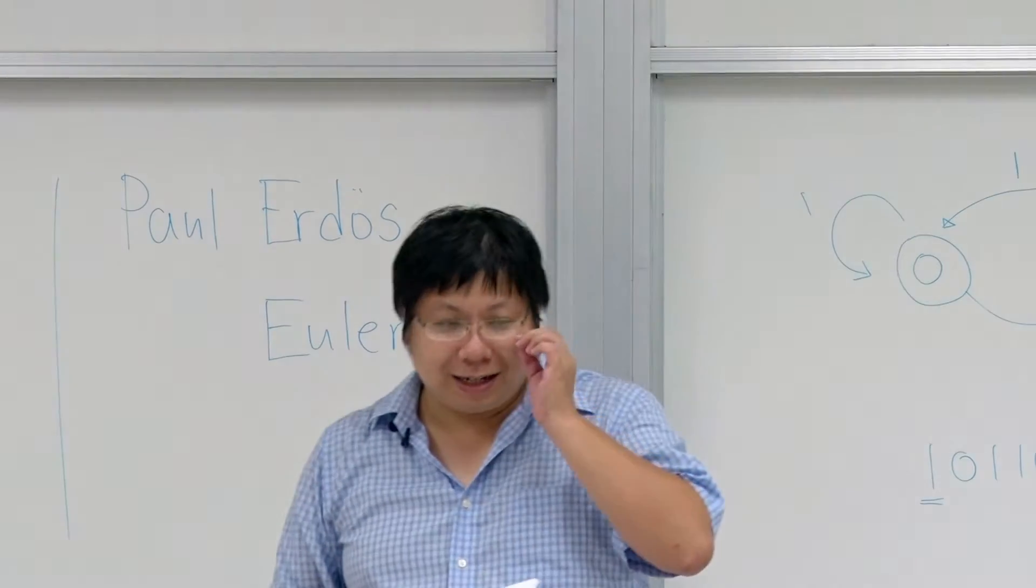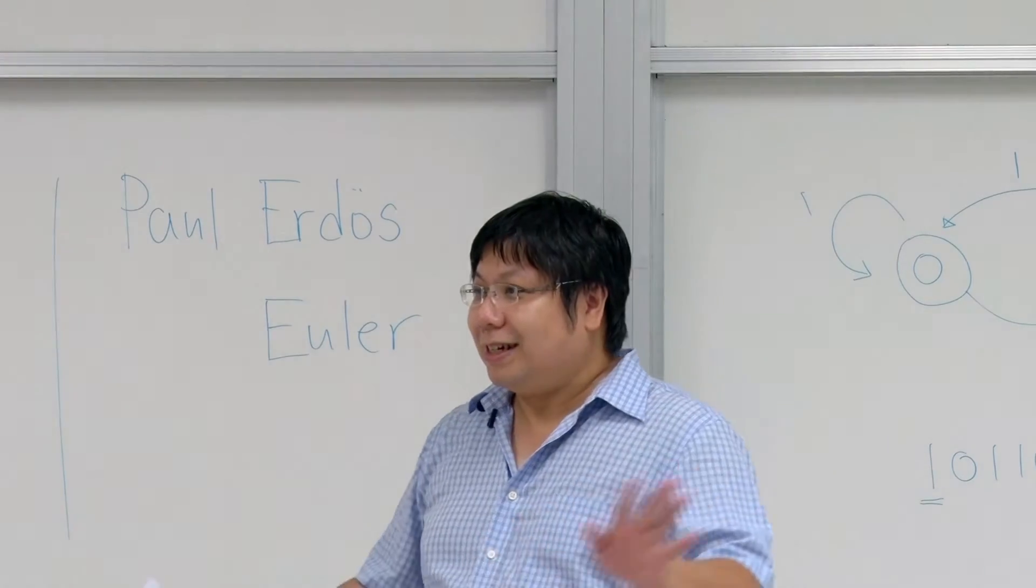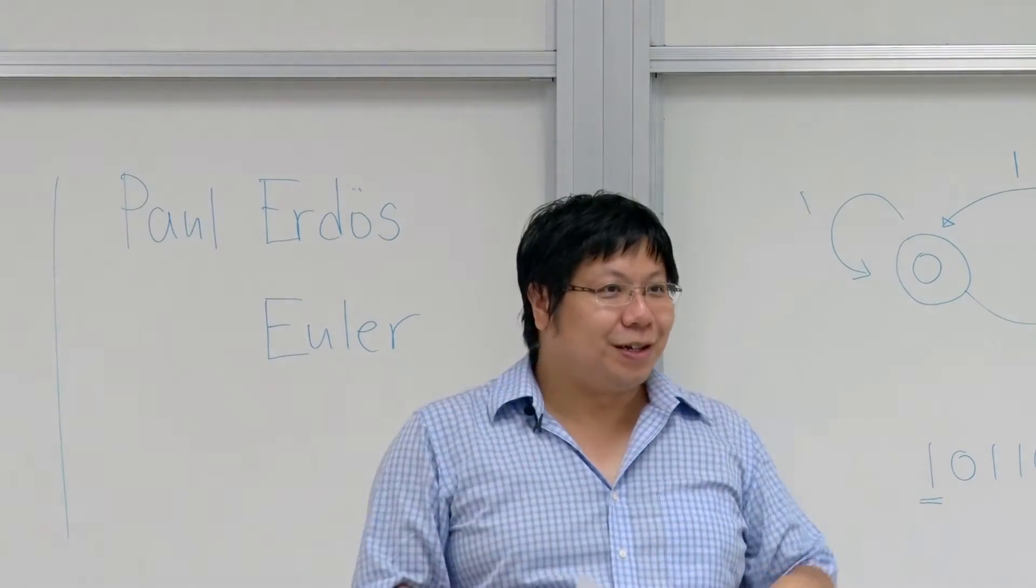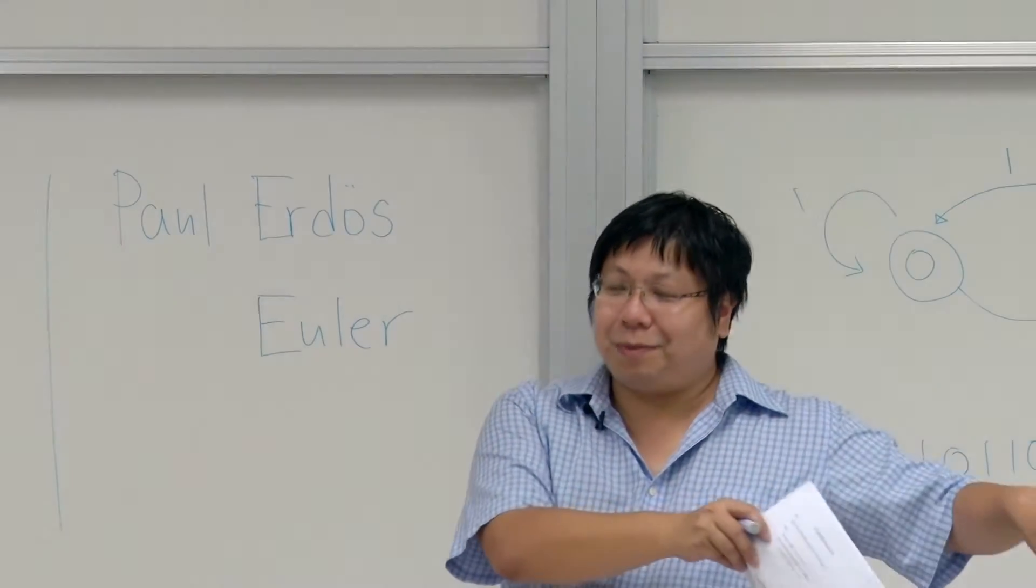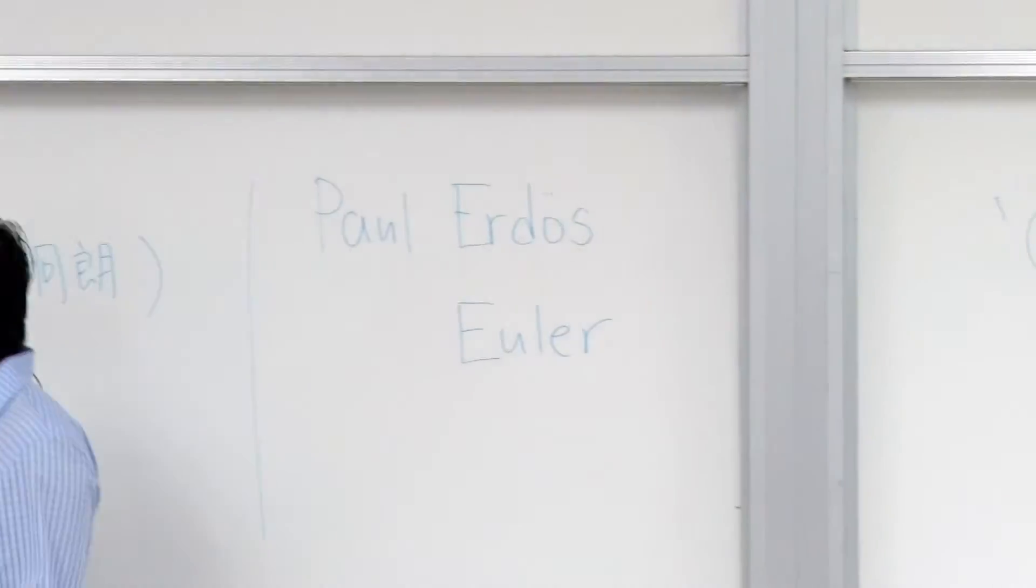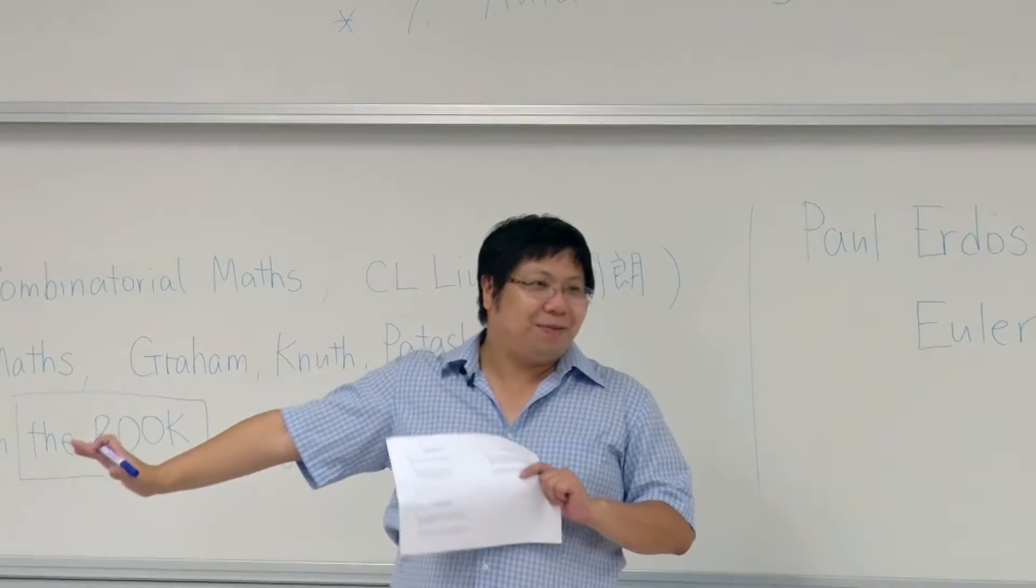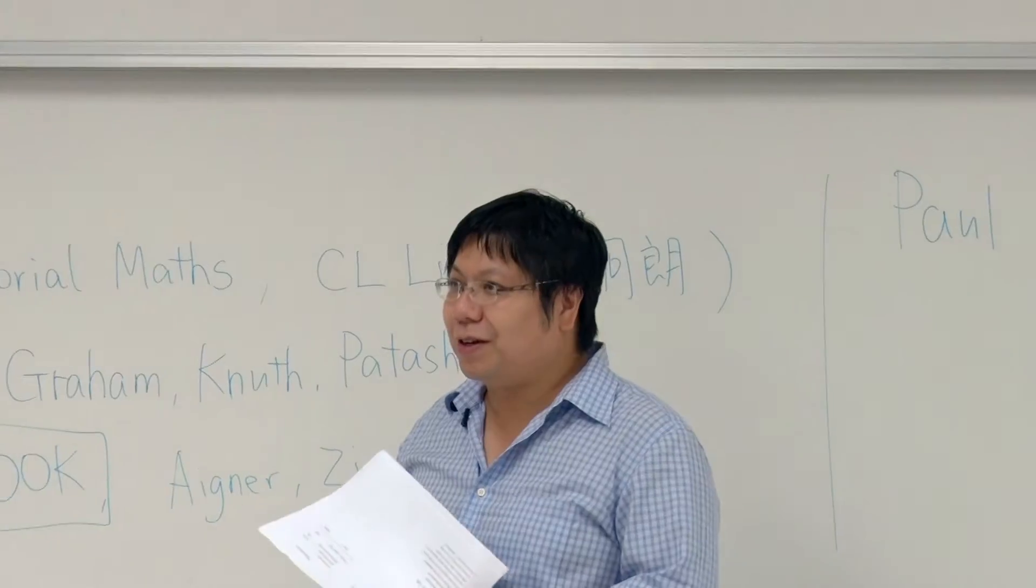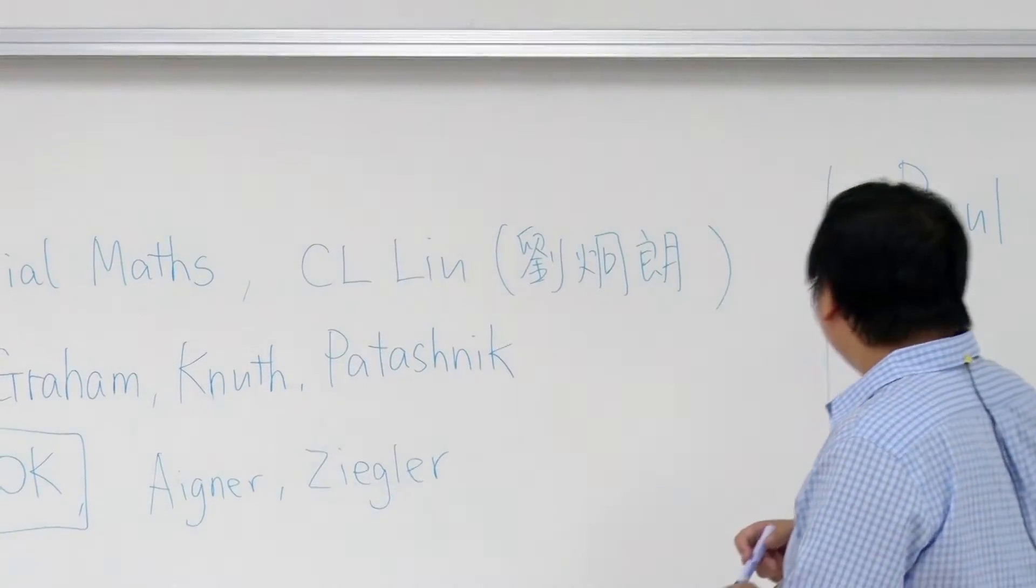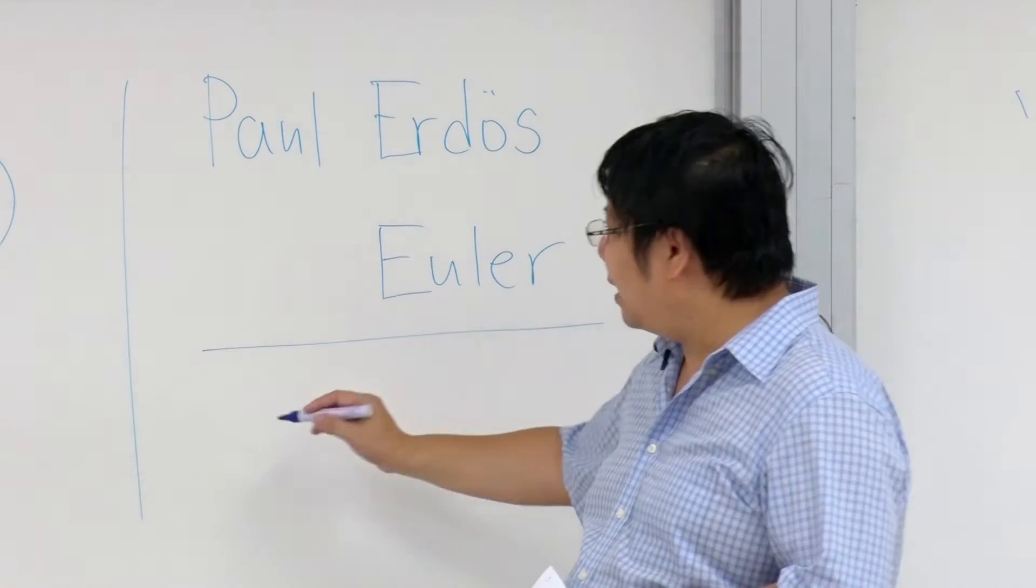He doesn't hold a regular position. He's not a professor. He travels around the world, going to this place, works with mathematicians here, go to another place, work with mathematicians there. In particular, Graham is one of the collaborators of this Erdős. He works with so many mathematicians. I guess he's one of the persons who has the most number of collaborators.